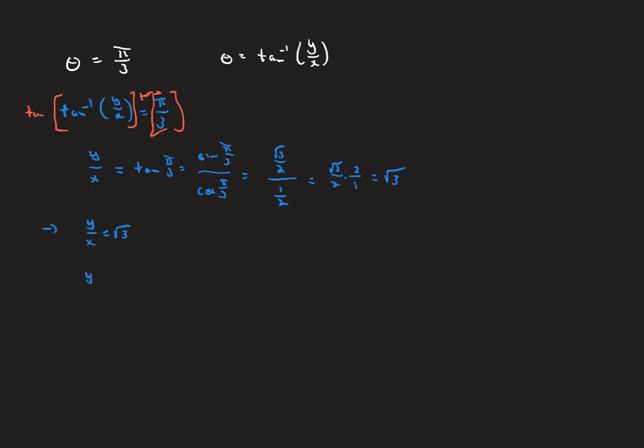Multiplying x to the other side gives y equals square root of three times x — the same equation we converted in the other direction earlier. These conversions are tough. You just have to get lots of practice, and when you get stuck, have somebody explain how to figure that one out.